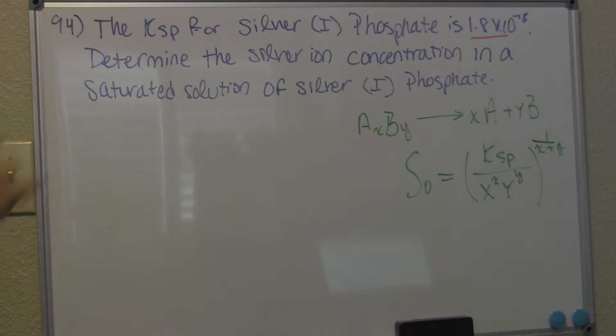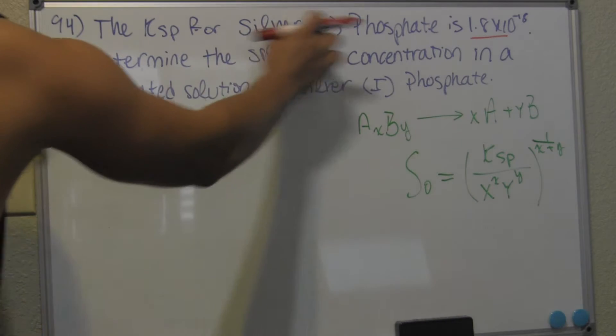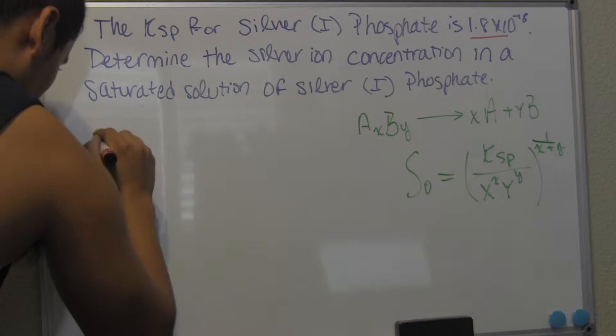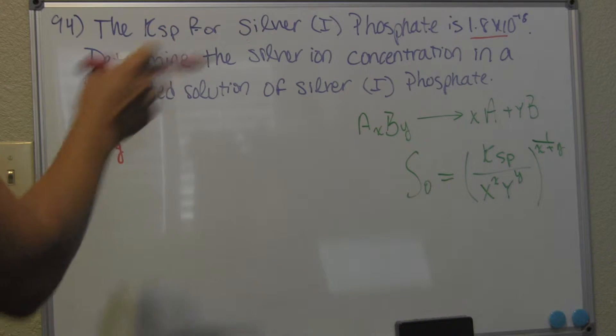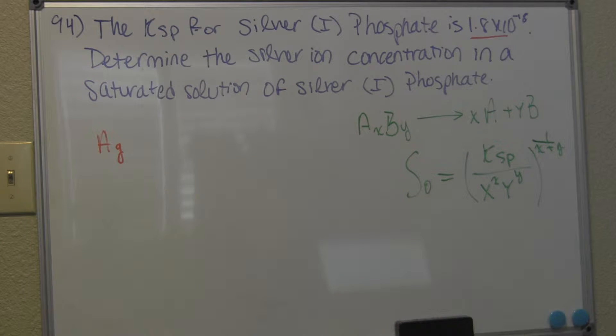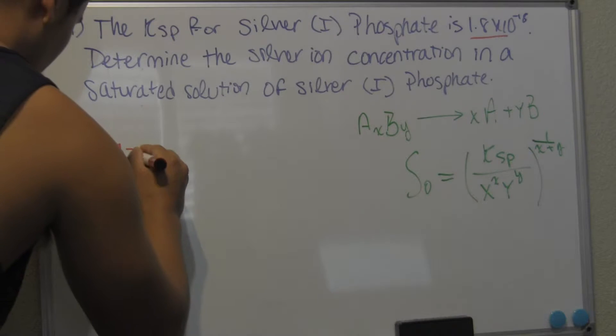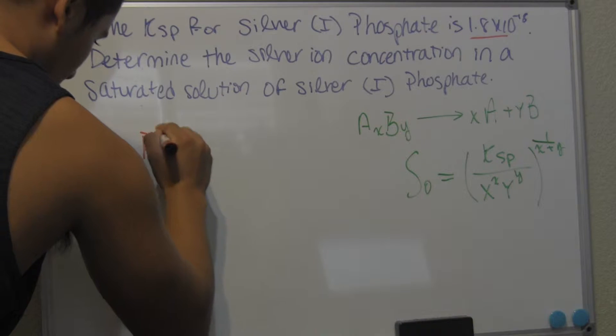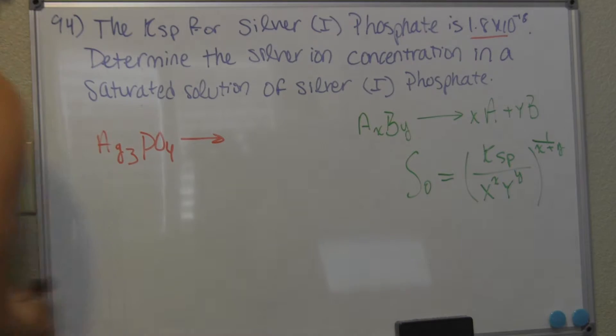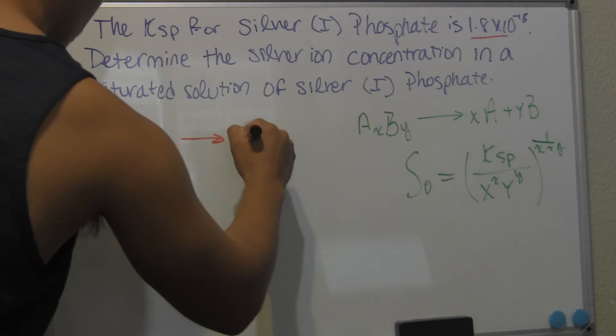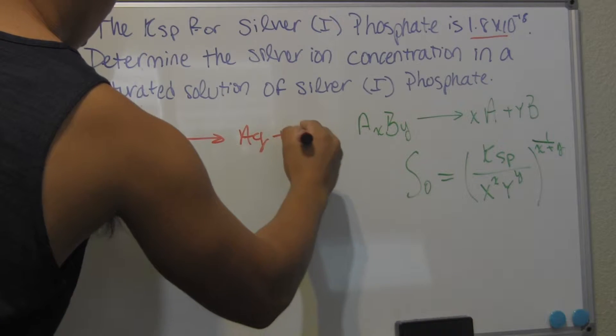All right. So the first thing to do here is to write out your reaction. We have silver (I) phosphate. So silver 1, meaning it's Ag+, and phosphate, which has an oxidation number of negative 3. So we're going to have three silvers and one phosphate dissolving it into silver and phosphate.